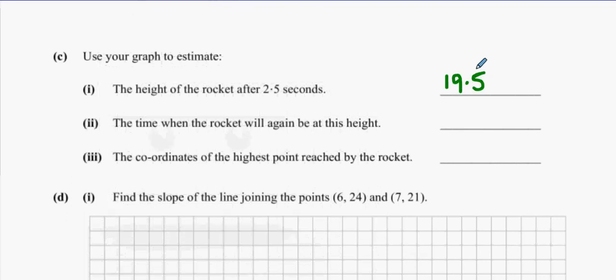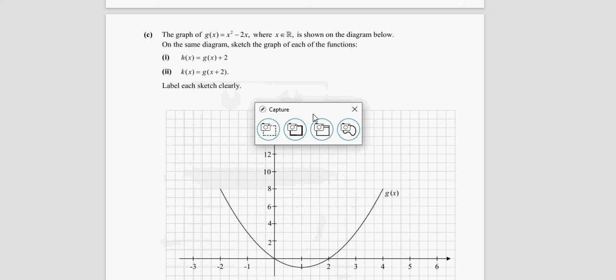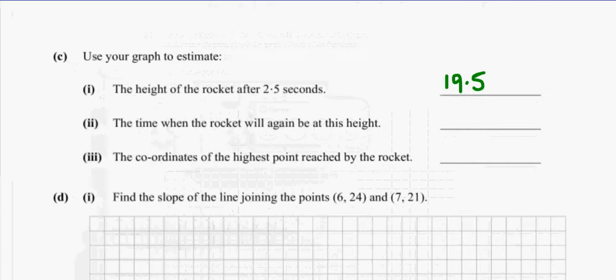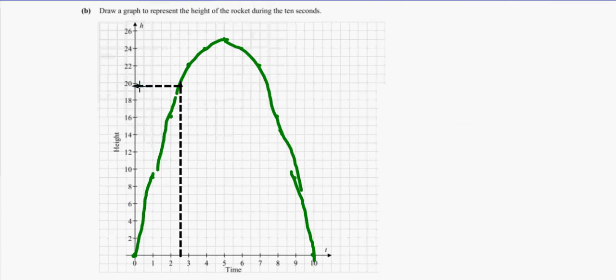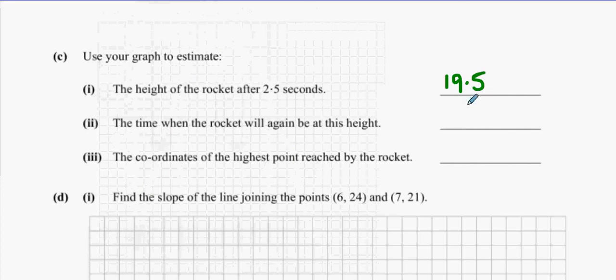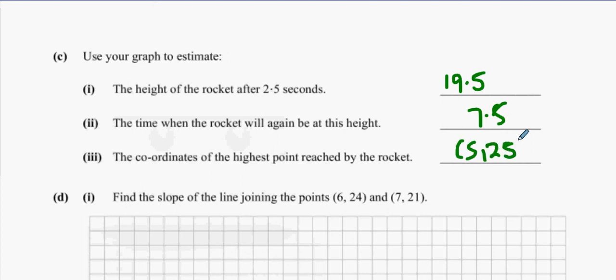Any way you can cheat using your calculator? You could do a step of 0.5. And you could find the exact answer, couldn't you? What time will the rocket be at this height again? So when will the rocket be this height again? Draw across. Go straight down. Is it 8.5? 7.5? I'll go for 7.5. There you go. Now, one of the corners is the highest point reached by the rocket. We already know it's 5 and 25.